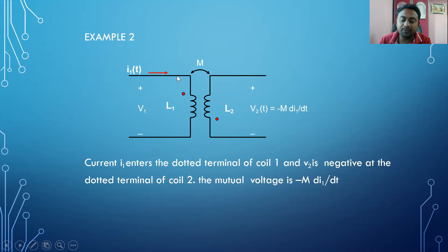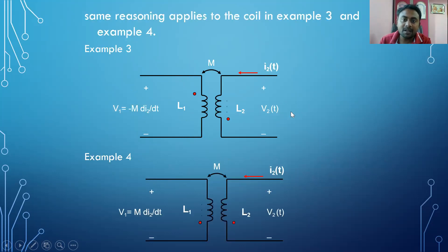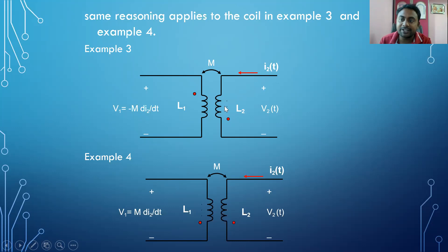Now I am feeding the current into coil 2. The current enters at the undotted terminal of coil 2, so I have to consider the opposite sign, that is −M di2/dt. When current enters at the undotted terminal, we need the currents in both coils to either both enter or both leave the dotted terminal for the same sign to follow. Since that is not the case here, we use the opposite sign: −M di2/dt.